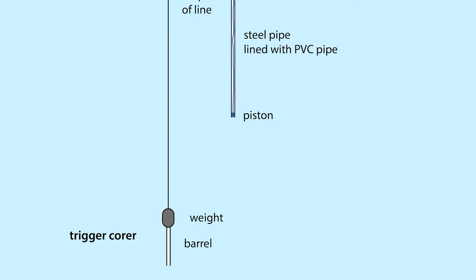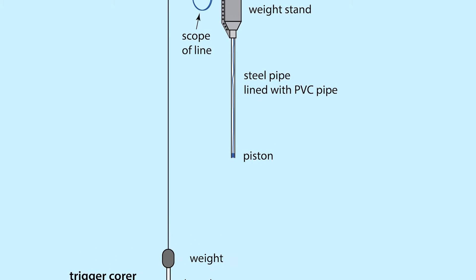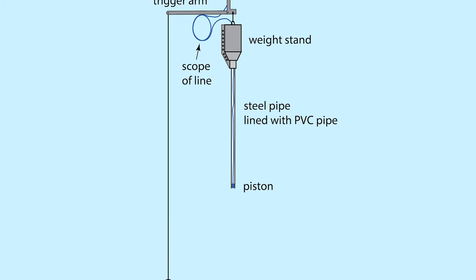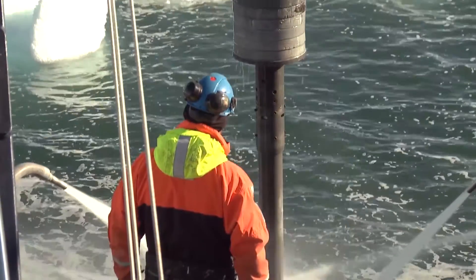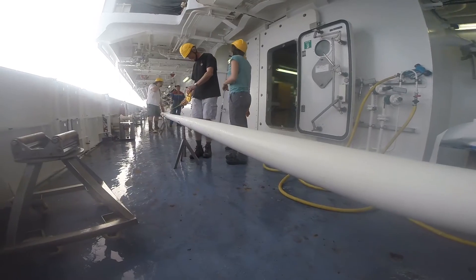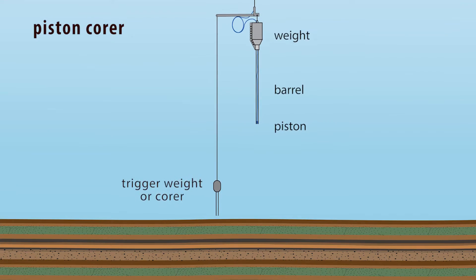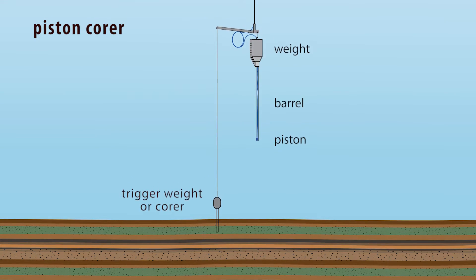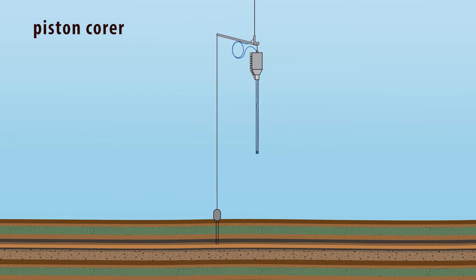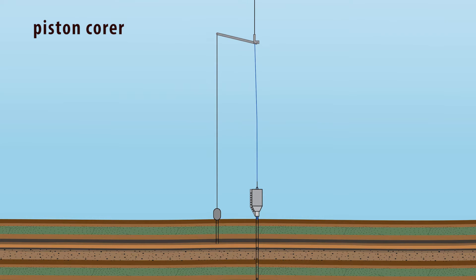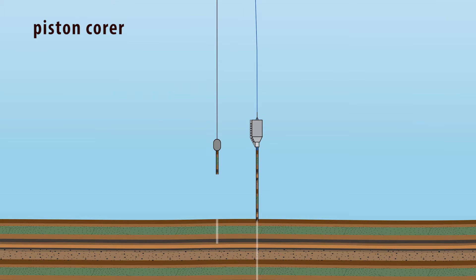The way we do it at OSU involves a trigger weight or trigger core, attached to a line several meters in length. That whole mechanism sits at the top of what we call the core head — the weight stand of the core. That weight stand has thousands of pounds of lead weight on top of a length of steel pipe that, depending on the environment, is rigged to be between 20 and 50 feet long. When you hit the sediment bottom, the trigger weight hits first, releases a trigger arm, which frees that scope of line, and the piston core free falls into the bottom. It can ram through glacial clay tens of meters.